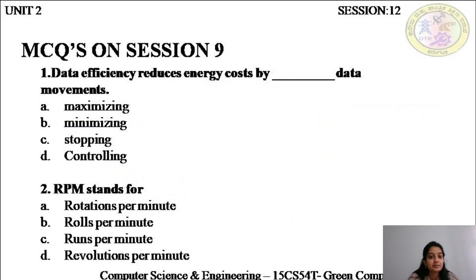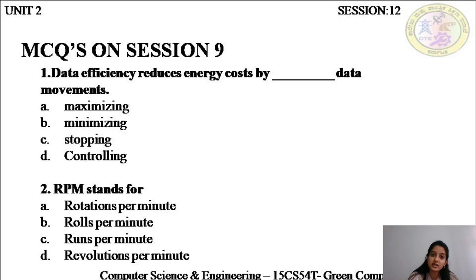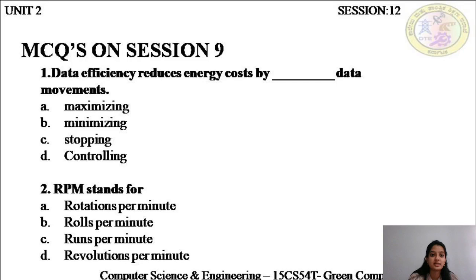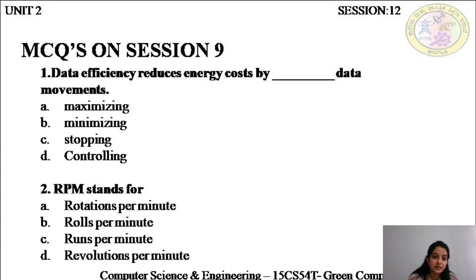The first MCQ on session nine: data efficiency reduces energy costs by data movements — maximizing, minimizing, stopping, or controlling? Data efficiency means you need to have minimal data movements. You need to minimize the accesses to the hard disk drive. Your data and instructions are stored on the hard disk, and every time you want to run the process, you need to bring that data from the hard disk into your CPU, and once the CPU finishes, it puts the results back in the hard disk. This movement between the main memory and the CPU needs to be minimized. So data efficiency reduces energy costs by minimizing data movements — that is the right answer.